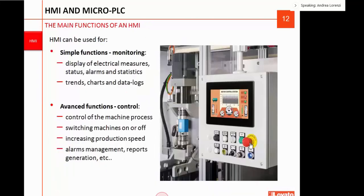HMI can be interfaced with digital metering devices, controllers like power factor controllers, automatic transfer switch controllers, motor starters like soft starters and drives, or external gateways, softwares, and SCADA. If you need to interface the HMI to a monitoring system like software or SCADA, you can connect the HMI to the local area network and create interaction between all these devices. HMI can be used to perform simple or advanced functions. Simple functions include using the display to read electrical measures, machine status, alarms, statistics, live trends, data logging, and charts. Advanced functions include commanding the machine process, switching on or off, increasing production speed, managing alarms, and generating automatic reports.